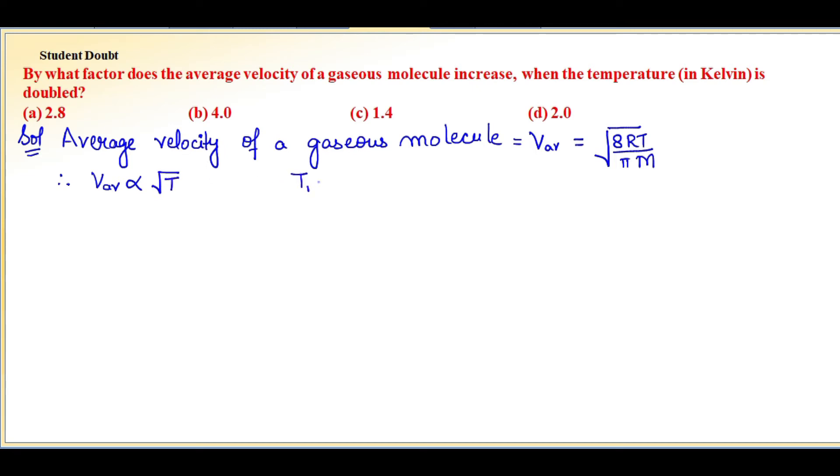Let T₁ = T and T₂ = 2T. v_av1 means the average velocity in the first condition.